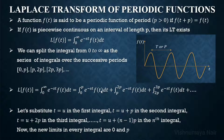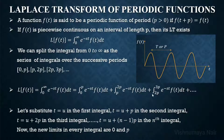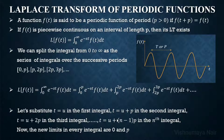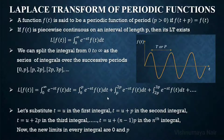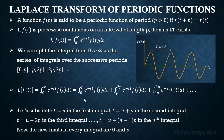Now let's substitute t in the first integral with u, t in the second integral with u plus p, t in the third integral with u plus 2p, and so on, so that in the nth integral we will be substituting t with u plus (n minus 1)p. This is done in order to make the limit in every integral from 0 to p.